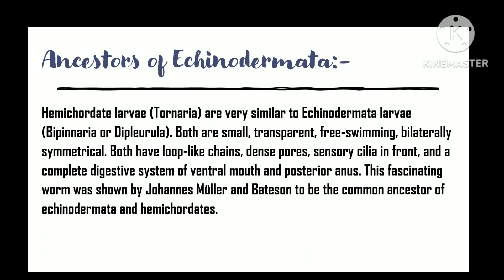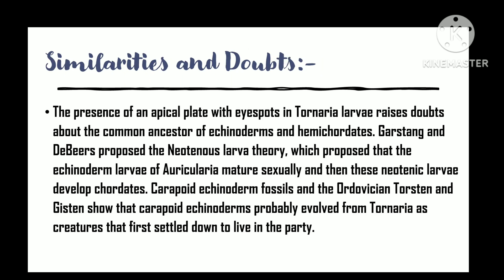Echinoderm ancestry: The hemichordate tornaria larva is strikingly similar to the bipinaria or dipleurula larva of echinoderms. Both are small, transparent, free-swimming, and bilaterally symmetrical. Both have similar ciliated bands, a dorsal pore, sensory cilia at the anterior end, and a complete digestive system with ventral mouth and posterior anus. Muller and Bateson suggest a common ancestry for echinoderms and hemichordates.